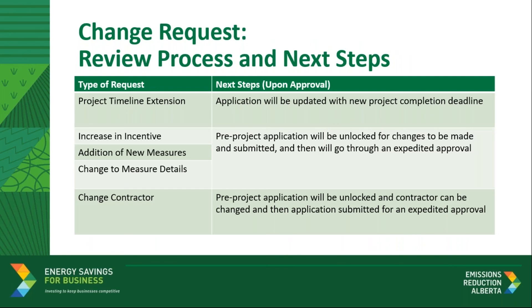Once a participant has submitted a change request, all change requests get reviewed, other than the contractor change. If you are requesting a project timeline extension, the system will update your application with the new project completion deadline upon approval. If you are requesting an incentive increase, adding new measures, or changing measure details, the change request is approved and the pre-project application is unlocked. You then update your application and submit the new changes, and it will go through an expedited approval process. If you are changing your contractor, the pre-project application is unlocked so you can change your contractor and submit again. Thanks for walking us through that, Myron. Understanding these expectations ought to make this phase of the program participation easier for participants, contractors, and the review team.